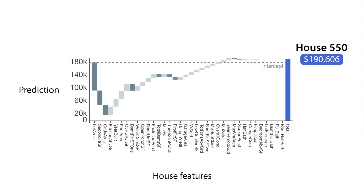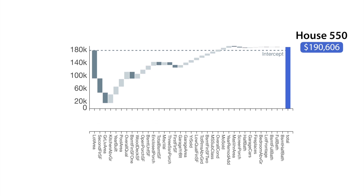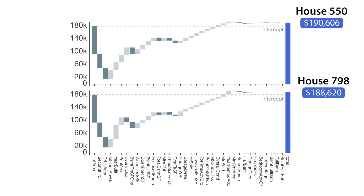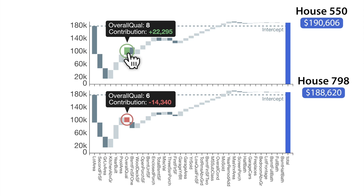Housing features are on the bottom x-axis and the cumulative sum of the prediction is on the y-axis. Using Gamut, we can also compare multiple instances. These two houses have roughly the same predicted price, but for different reasons — using Gamut, we can spot where these two houses differ. Users can hover over any feature to see the exact value and how it affects the final prediction. Here we see house 550 has an overall quality of 8, which adds about $22,000 to its prediction, whereas house 798 has an overall quality of 6, which subtracts about $14,000 from its prediction.